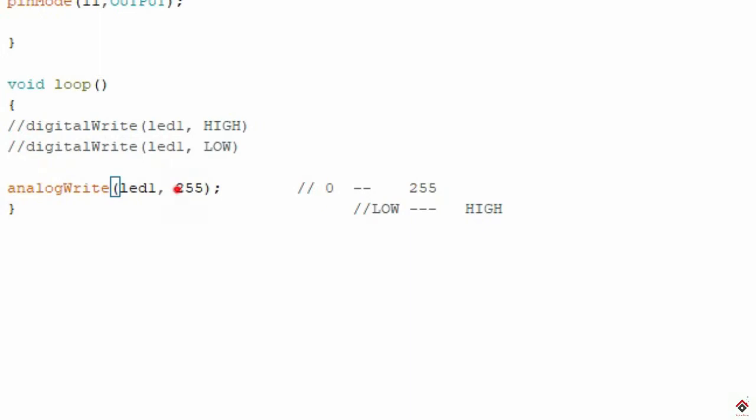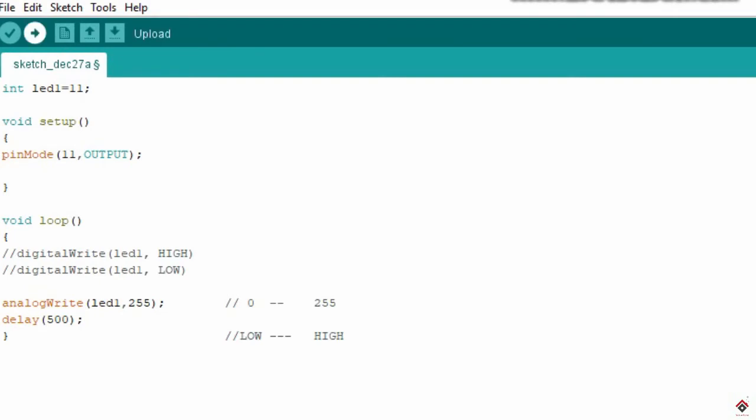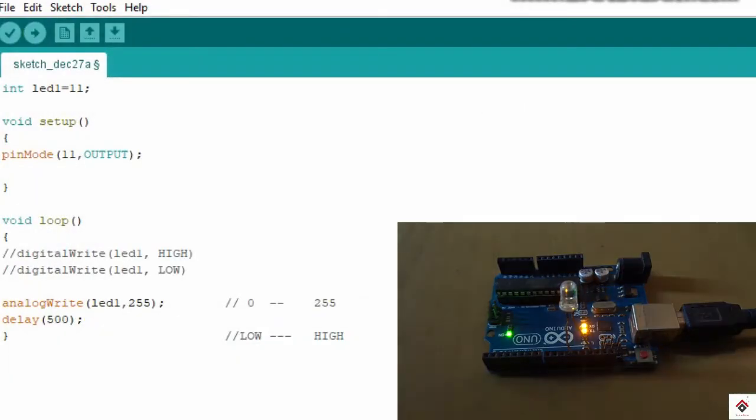So I'll show you once and make it as 255. So I'll give some delay. See the LED is at its full brightness. So if I give it as 0 it will turn off.